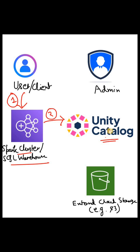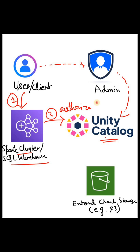Initially, the user might have reached out to the admin team for certain data access. The admin team might have already added the user directly with certain permissions to Unity Catalog, or attached the user to a group which has a certain access level. So Unity Catalog first checks whether the user or client is authorized or not to get the data — this is the authorization step.